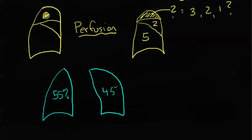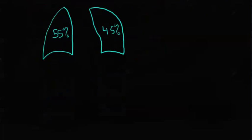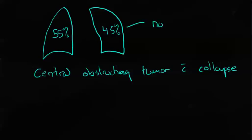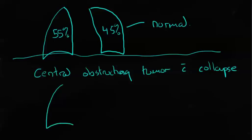normally about 55% of the perfusion goes to the right lung and about 45% of the perfusion goes to the left lung. But in a patient with a central obstructing tumor with collapse, this one was normal. But in a patient with a central obstructing tumor and collapse, we may expect to see something a little bit different, like say 25% here and 75% here.